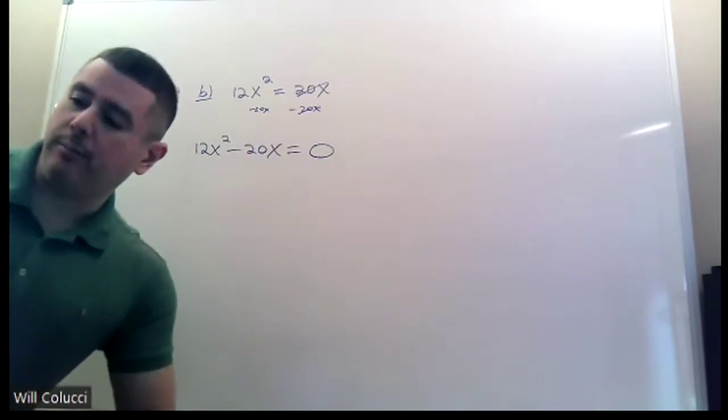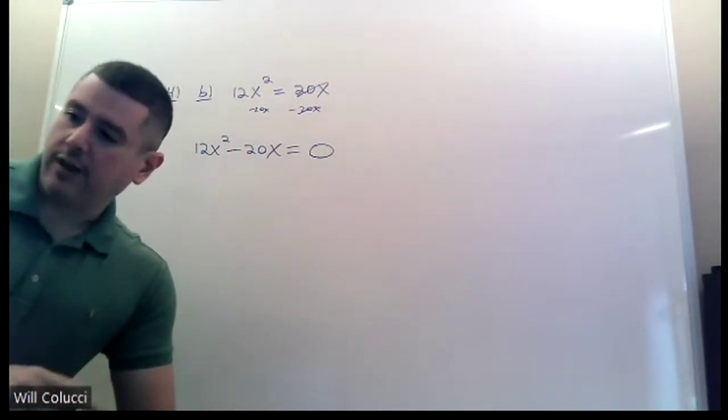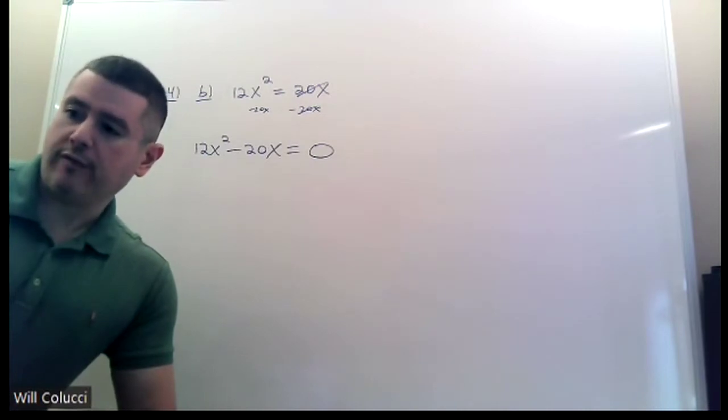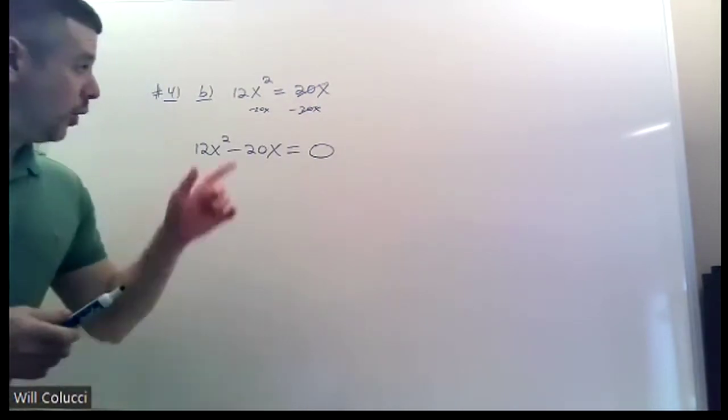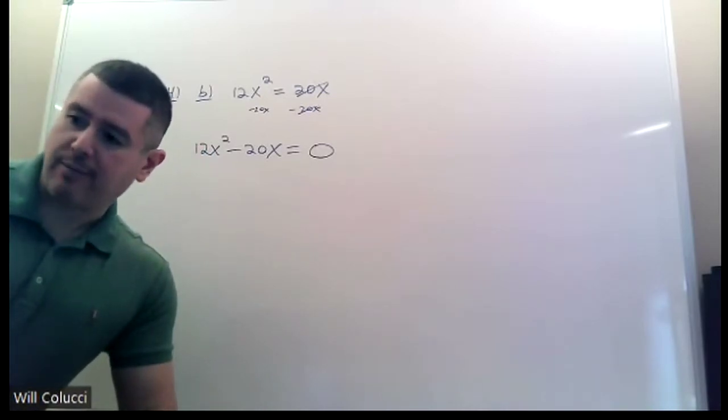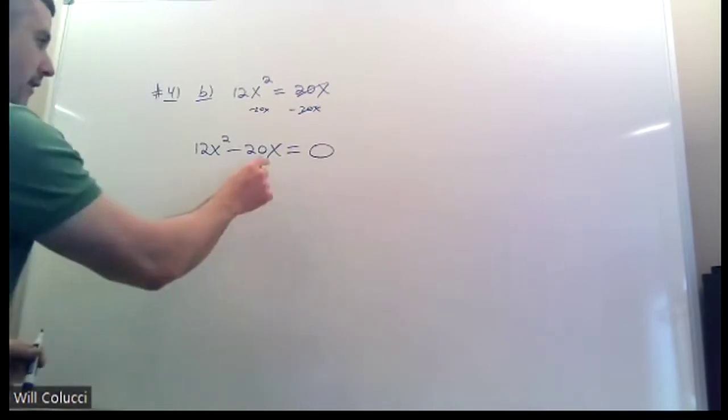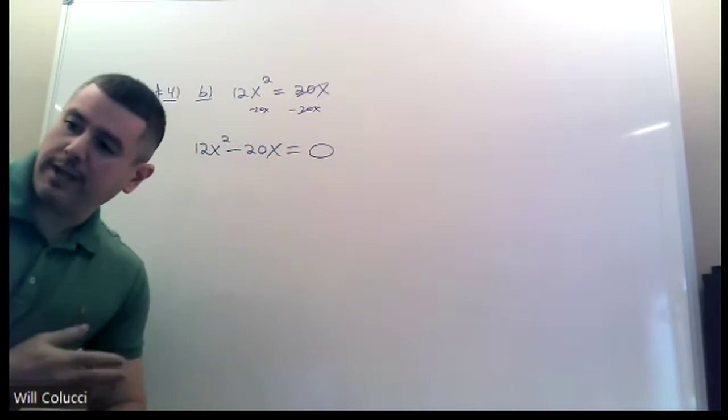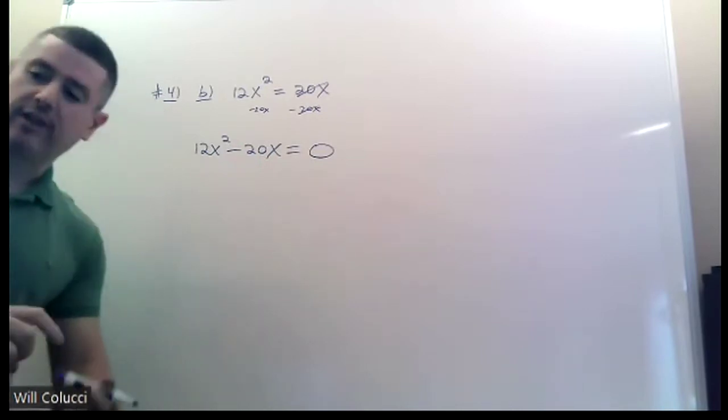Now, here's where you have to go back to those factoring lessons. Type 1, type 2, type 3. Type 2 is a trinomial with a 1 in front. This is not a trinomial. And there is not a 1 in front of the x squared. This is not a difference of perfect squares. It's not type 3. 12 is not a perfect square and 20 is not a perfect square. They have a letter in common. So the only type that that could possibly be would be type 1, the GCF, the greatest common factor.